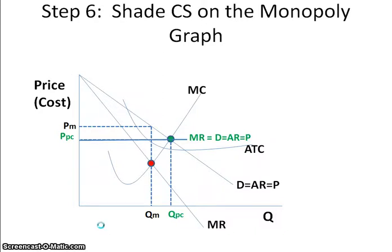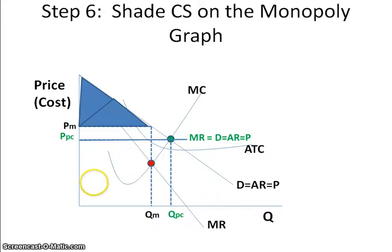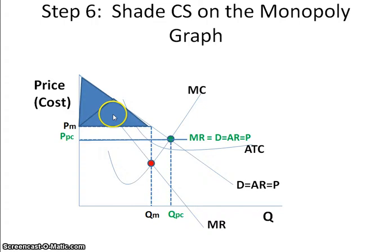Step 6: Shade in consumer surplus on the monopoly graph. Consumer surplus is the benefit that consumers receive for participating in the market. It is found by looking below the demand curve and above the price that the monopoly is charging. The consumer surplus for the monopoly is this blue triangle here.